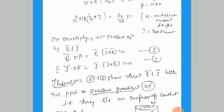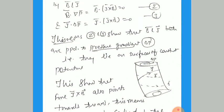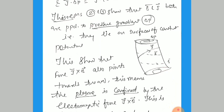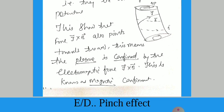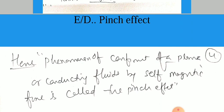These equations show that B and J both are perpendicular to the pressure gradient ∇P. This is the desired direction of the pressure gradient — like the surface of constant potential shown in the figure, where J and B lie along the surface. This shows the force J × B also points toward the axis, meaning the plasma is confined. There is a net inward force toward the axis responsible for the confinement of the plasma, like a magnetic bottle, by electromagnetic force J × B. This is known as magnetic confinement. The phenomena of confinement of the plasma by the resultant magnetic force is called the Pinch Effect.